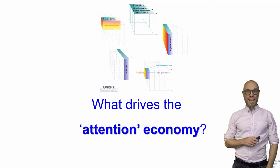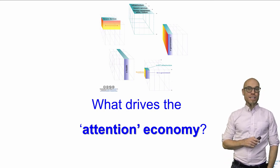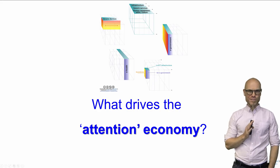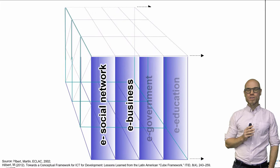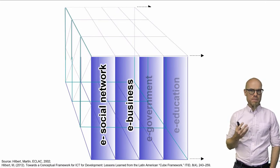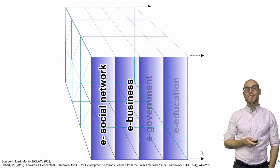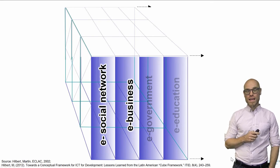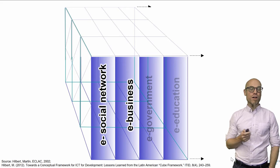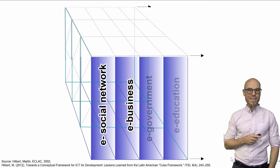So let's look at what drives the attention economy. Following our framework, we look at two sectors in specific: social networks and e-business, which includes e-commerce, same as business includes commerce. Commerce is a part of business. So let's look at how a mix of these two very prominent sectors of society right now are drawn in and dominated by the attention economy.